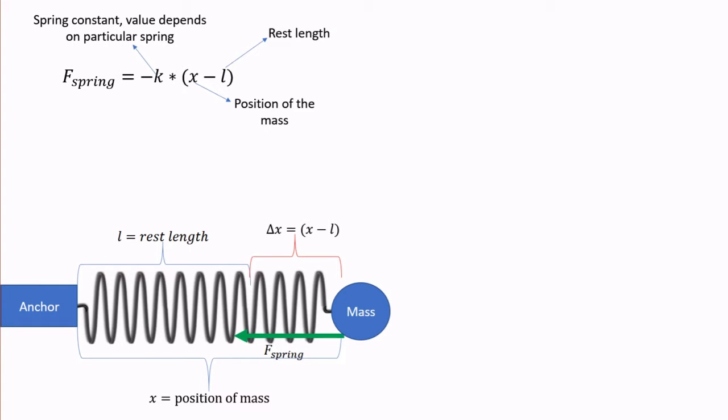The sign of this quantity also tells us whether we have stretched or compressed the spring. For instance, imagine that the spring's rest length is 1 meter. If it is currently 1.5 meters long, then we do 1.5 minus 1, and we get a positive 0.5 meters. This means the spring was stretched by 0.5 meters.